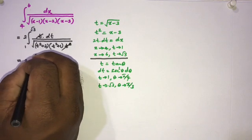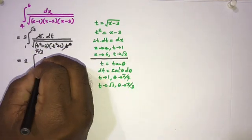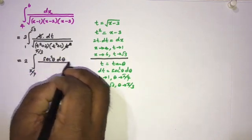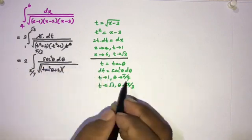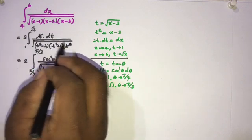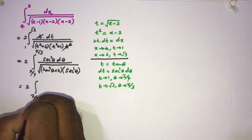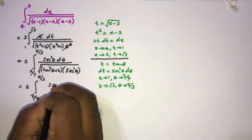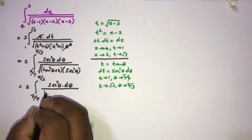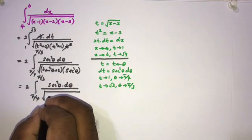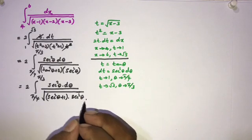Plugging in, the integral becomes 2 times the integral from π/4 to π/3 of sec²(θ) dθ over the square root of (tan²(θ) plus 2)(tan²(θ) plus 1). Since 1 plus tan²(θ) equals sec²(θ), the denominator simplifies using sec²(θ) plus 1, which we can write in terms of sec²(θ).